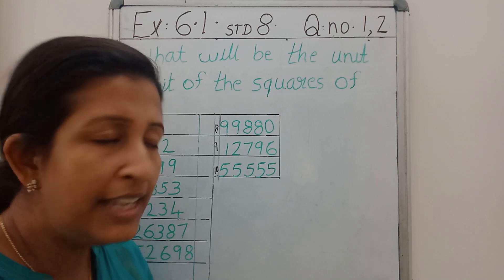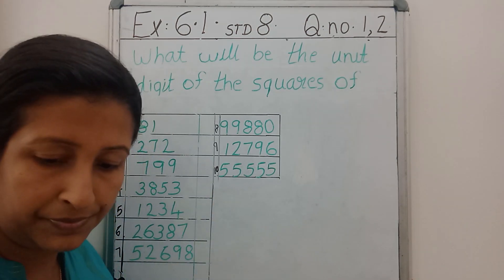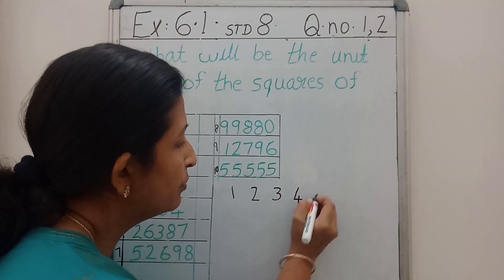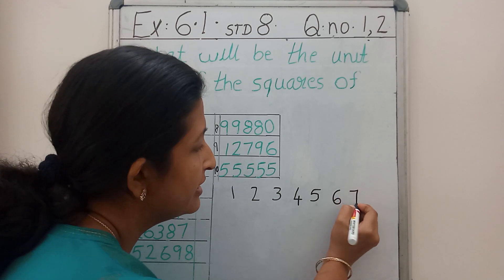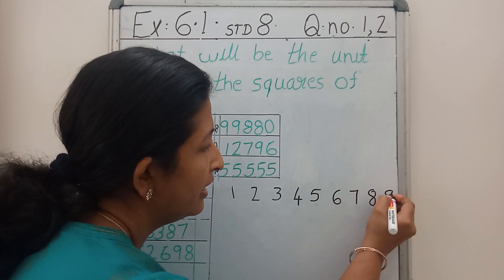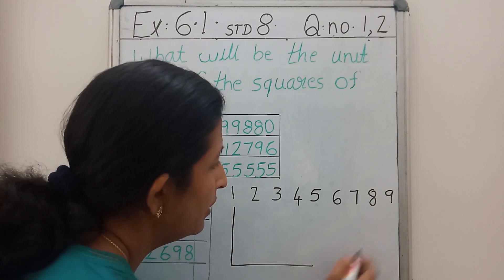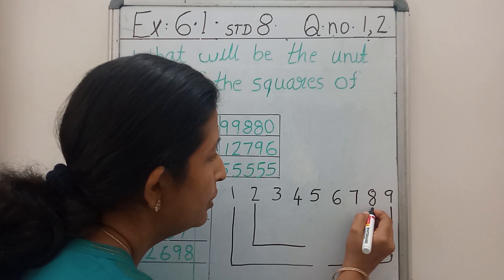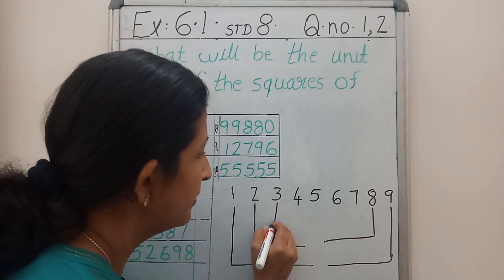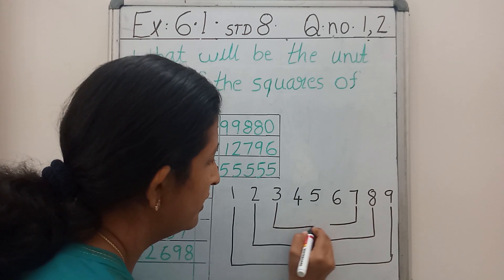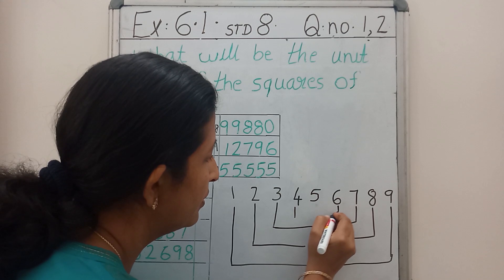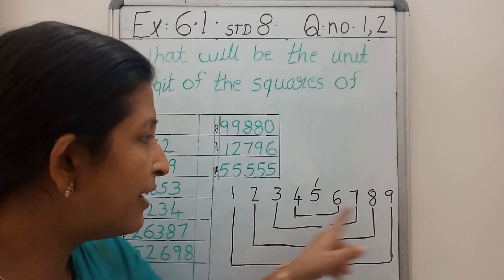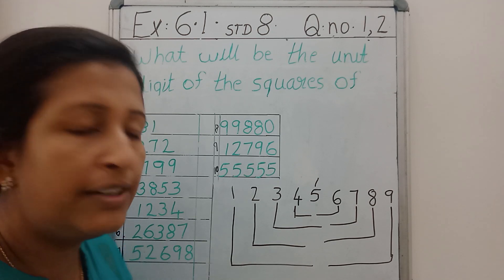We have studied a property. That property says that for digits 1, 2, 3, 4, 5, 6, 7, 8, 9 — if the number is ending with 1 and 9, the square should end with 1.